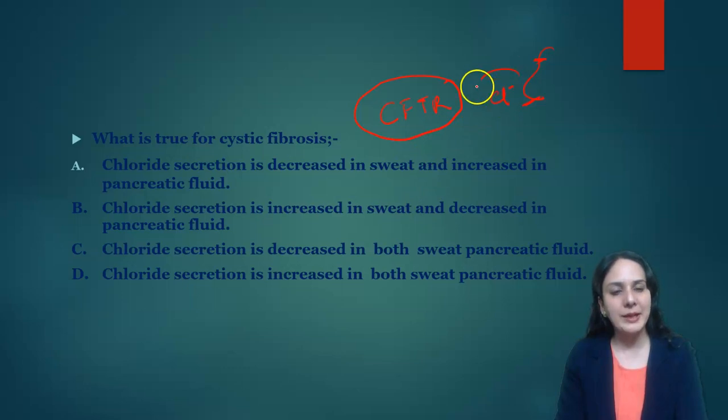There will be more chloride secretion in sweat, but due to CFTR gene mutation there is decreased secretion in pancreatic fluid because there is only one CFTR protein. As it is mutated, chloride cannot be secreted in pancreatic juice, whereas in sweat glands we have two - one is for reabsorption and both are mutated. So final end product is there is more chloride in the sweat. That's why sweat is salty.